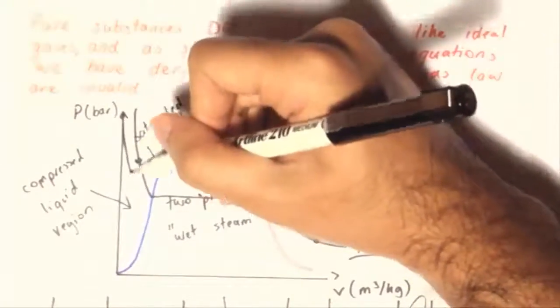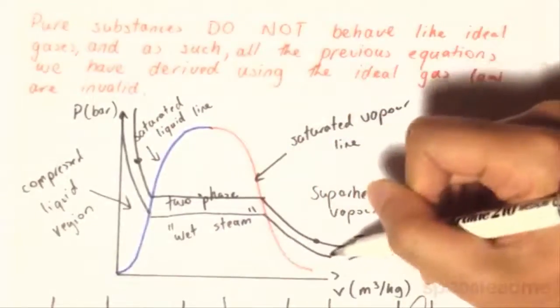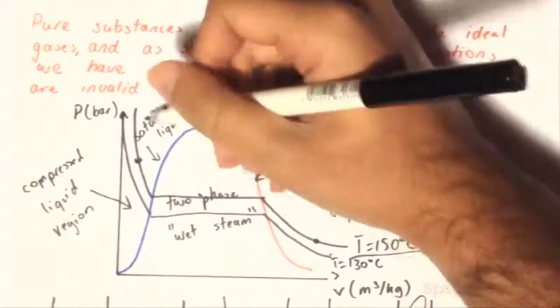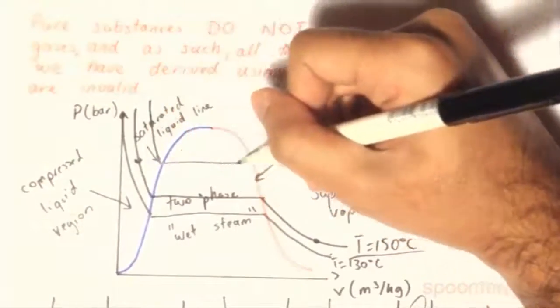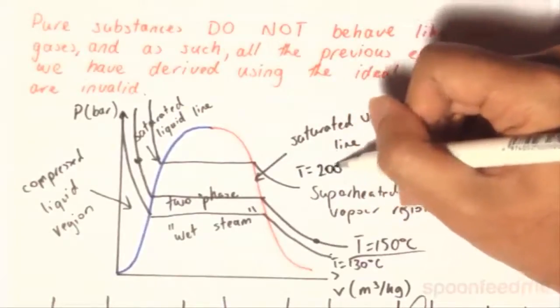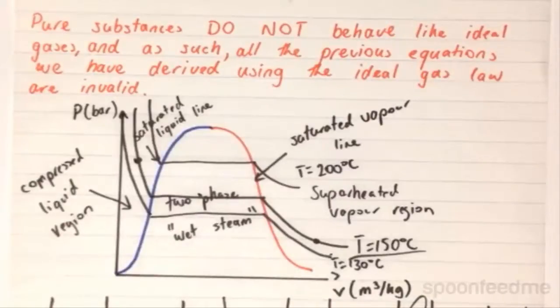And generally, we'll have many, many isotherms. We can have one over here. This one will be, say, maybe T is equal to 130 degrees Celsius. And obviously, as you go further up, you'll get higher temperatures. So this one can be like T is equal to 200 degrees Celsius. And there you have it, a simple PV diagram which illustrates exactly what happens during the pure state substances.